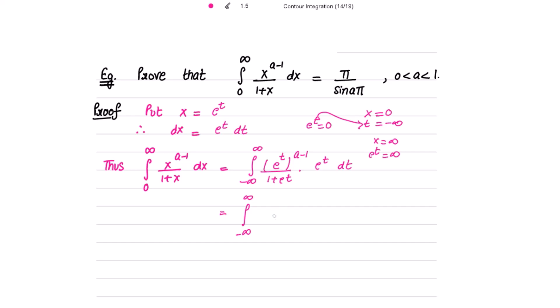Simplifying, the power becomes e^(at) and we can factor out e^(−t) · e^t from the numerator and denominator, leaving the integral from −∞ to +∞ of e^(at) over (1 + e^t) dt. Now we have e^t in the denominator.